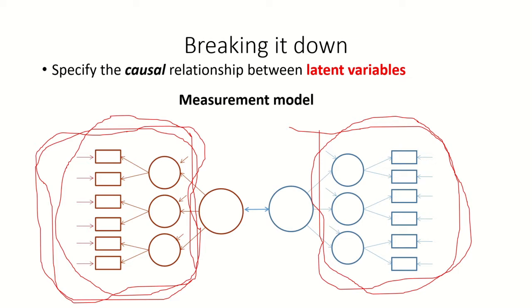And we do the same thing on this side, and we essentially test how well our measures are working. Importantly here, the second order latent factors are just assumed to be correlated. So we do not actually specify a causal direction here.